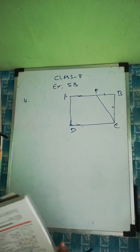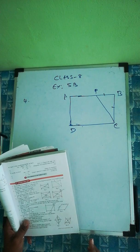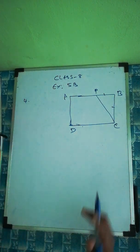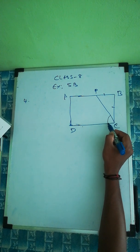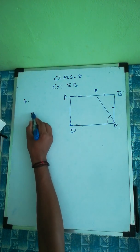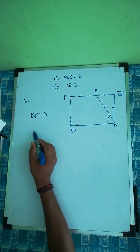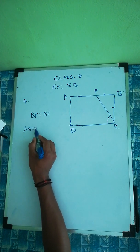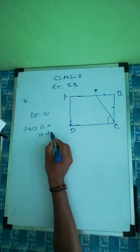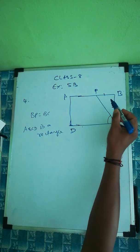Exercise 5B, question number 4. In the given figure ABCD, BP equal to BC. What is the measure of angle PCD? We are going to find angle PCD. ABCD is a rectangle.